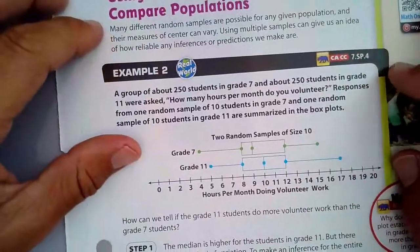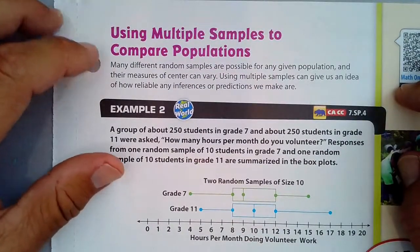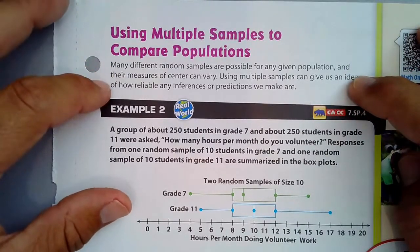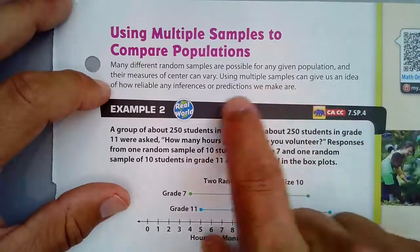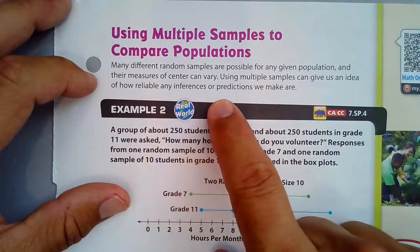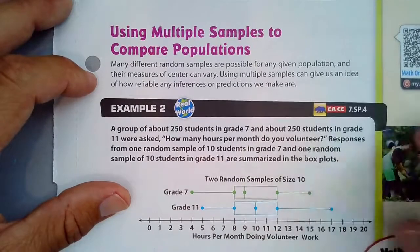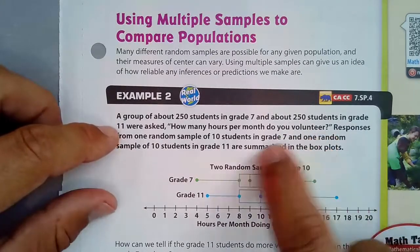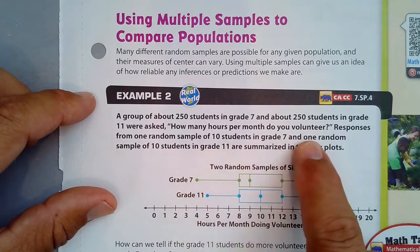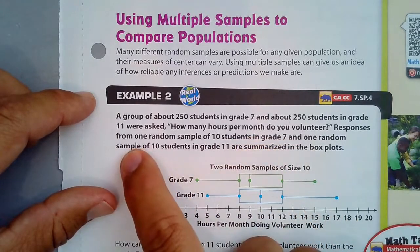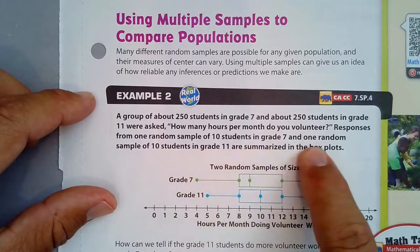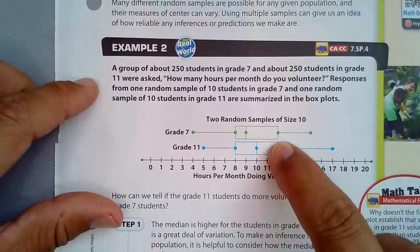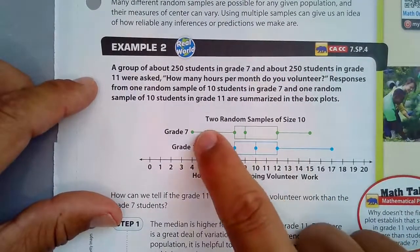Next: using multiple samples to compare populations. Many different random samples are possible for any given population and their measures of center can vary. Using multiple samples can give us an idea of how reliable any inferences or predictions we make are. Here are a group of about 250 students in grade 7 and about 250 in grade 11, asked how many hours they volunteer per month. Responses from one random sample of 10 students in grade 7 and one random sample of 10 students in grade 11 are summarized in box plots.